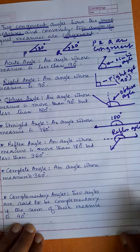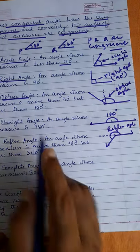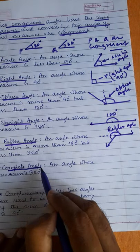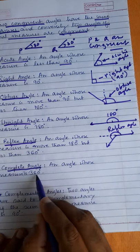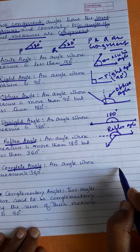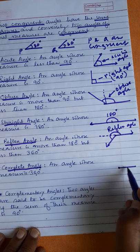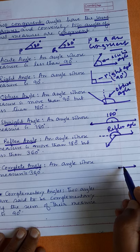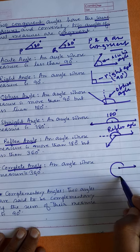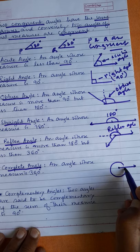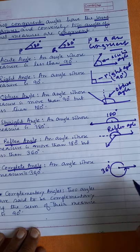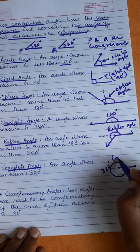After reflex angle comes the complete angle. A complete angle is 360 degrees. When this line rotates completely around a point, that is 360 degrees. The angle at a point going all the way around is 360 degrees and is called a complete angle.